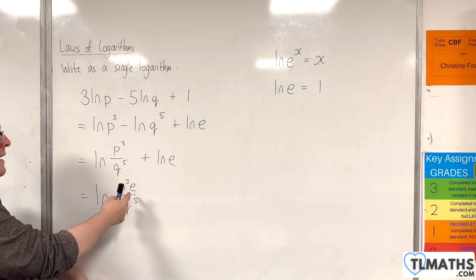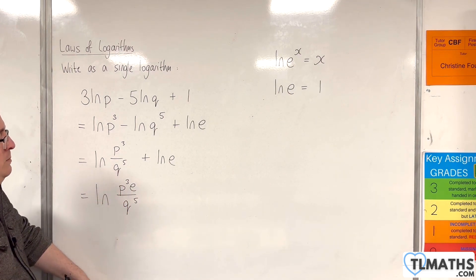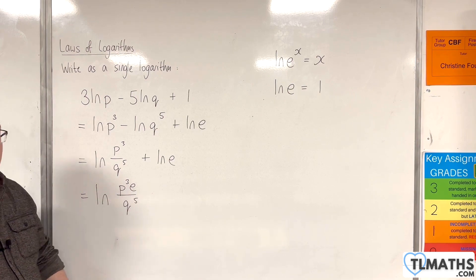Now you could write that as e times p cubed if you want, over q to the 5, it doesn't really matter.